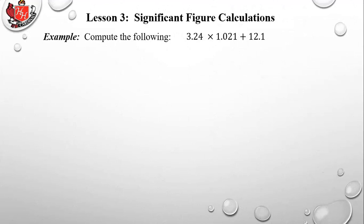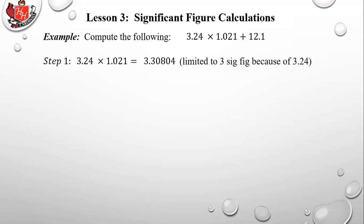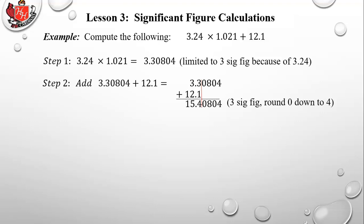Example: compute 3.24 × 1.021 + 12.1. Using PEMDAS, do the multiplication first. 3.24 × 1.021 = 3.30804 on a calculator. This limits us to three significant figures because of 3.24, but we don't round yet — we leave it as 3.30804.